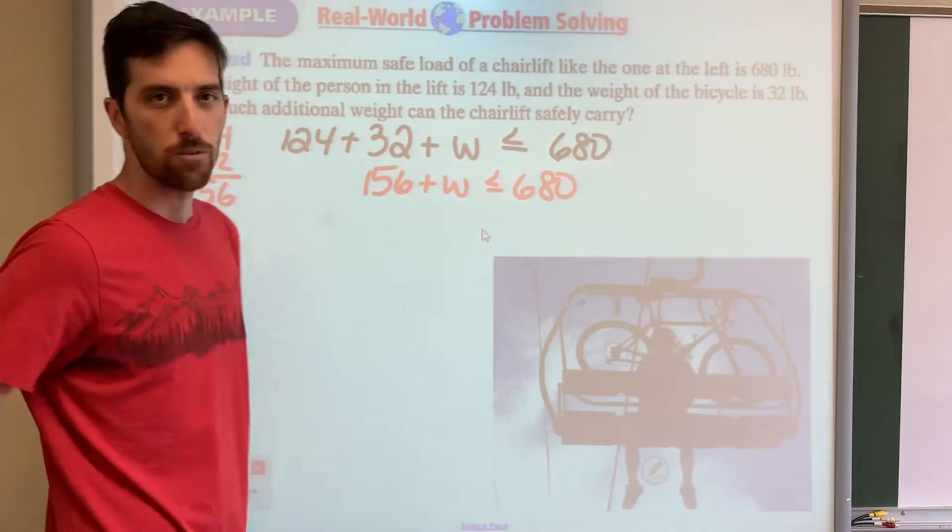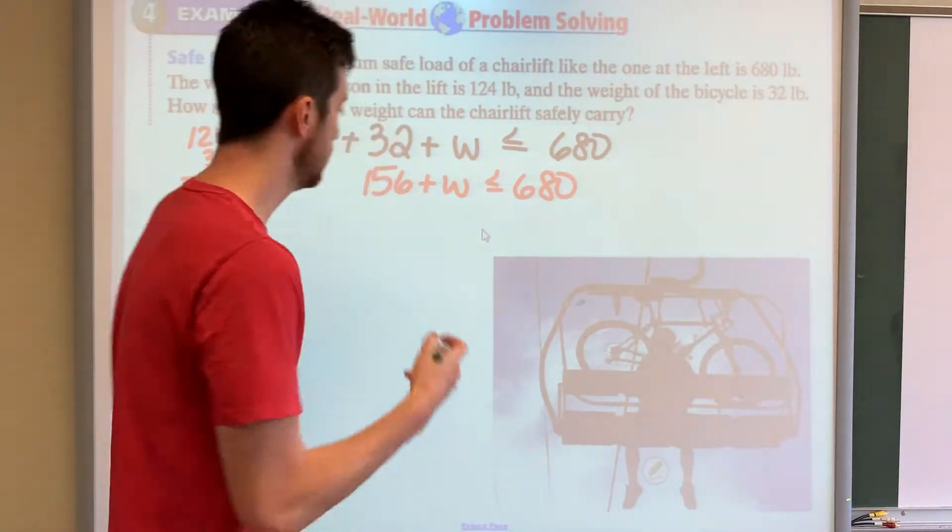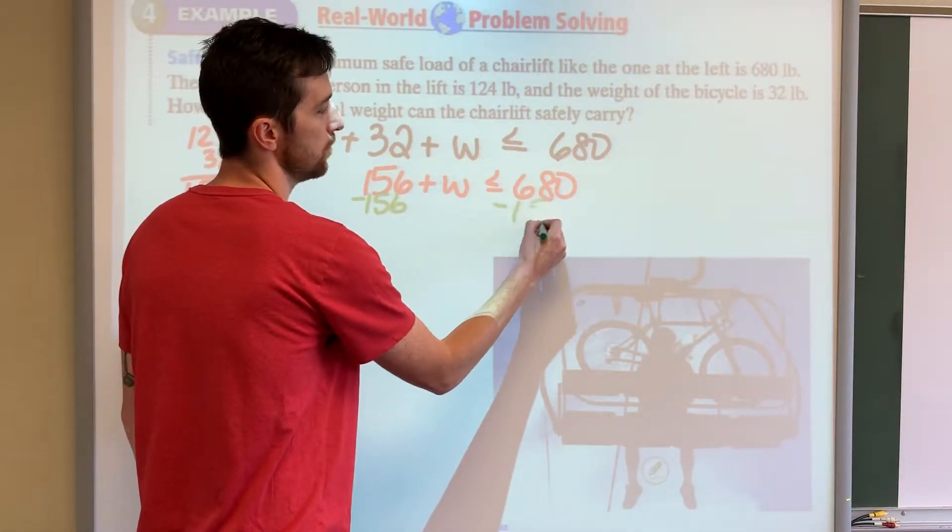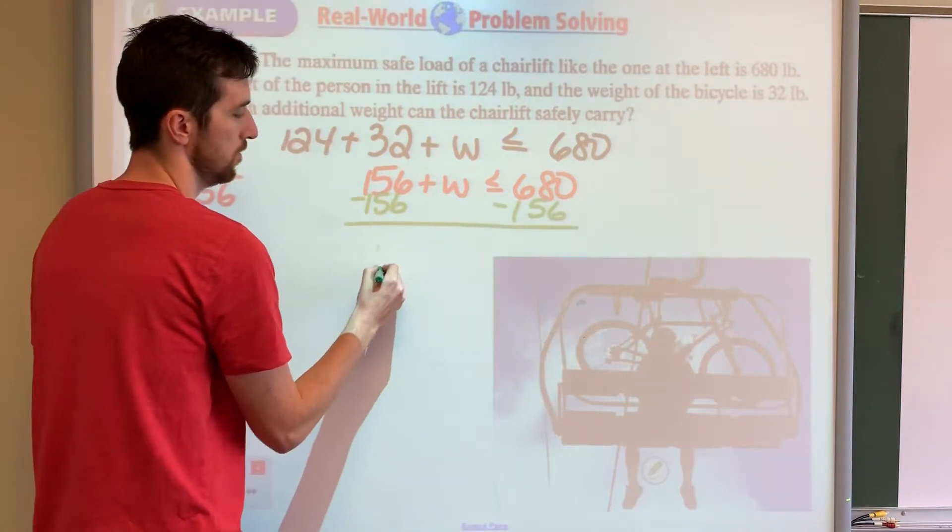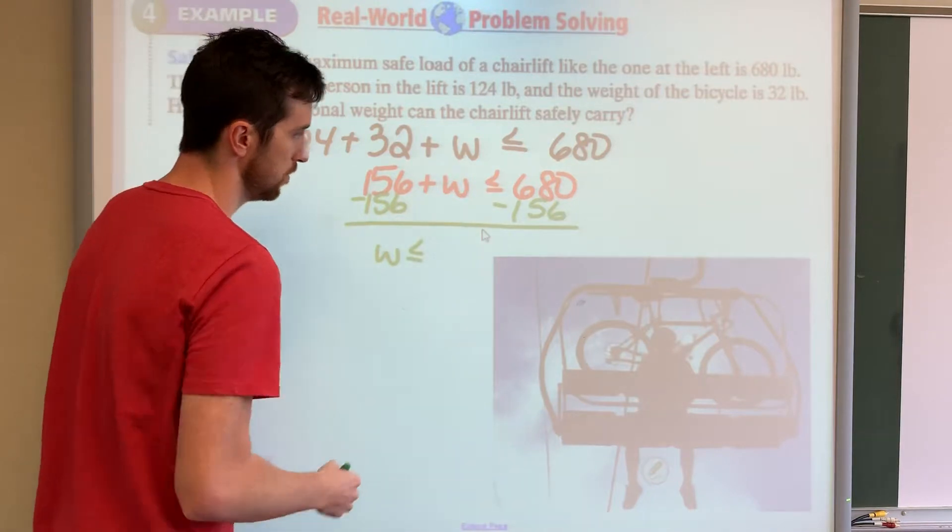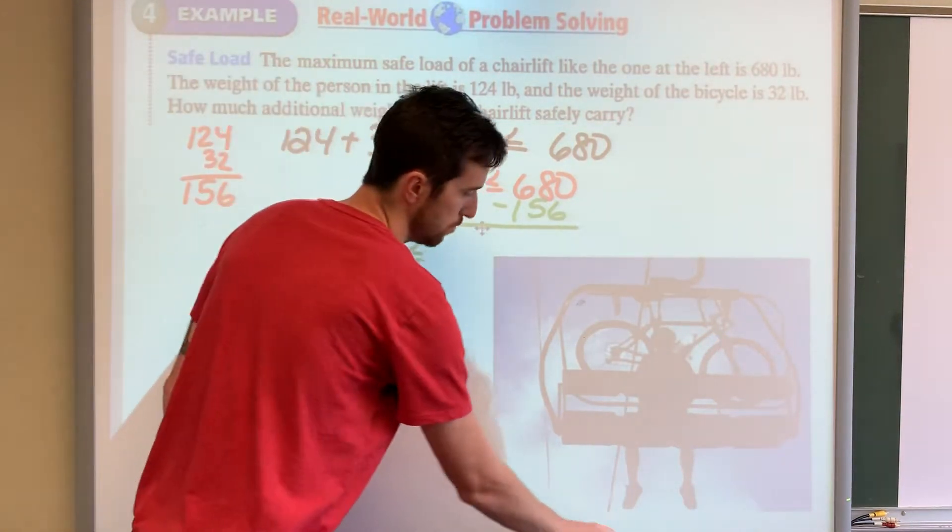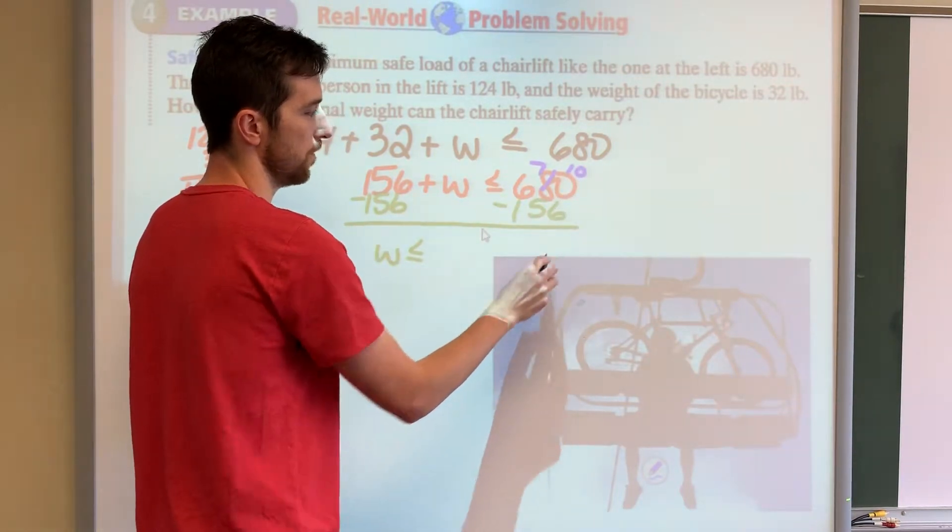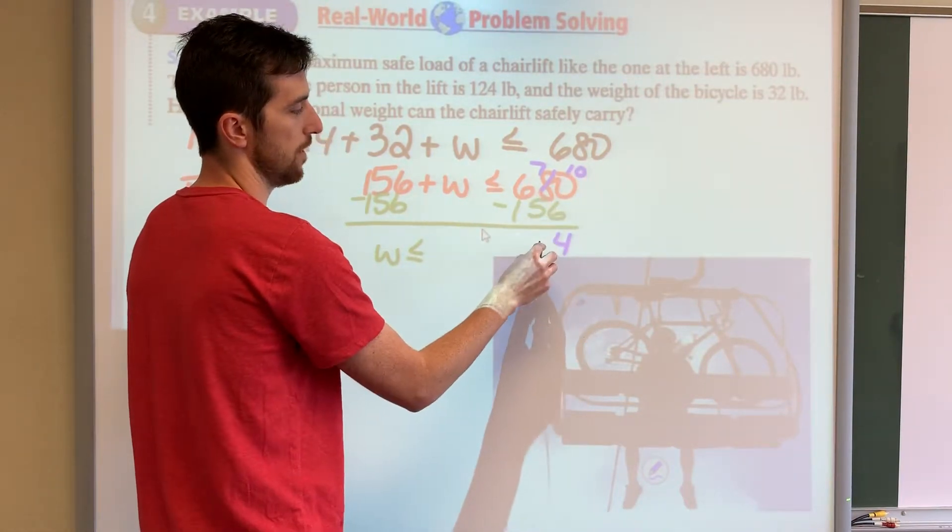How do we get rid of the 156 like the good old days? We subtract it. Minus 156, minus 156. W is less than or equal to... Let's see, you might have to do some borrowing. 7, 10, 10 minus 6 is 4, 7 minus 5 is 2.